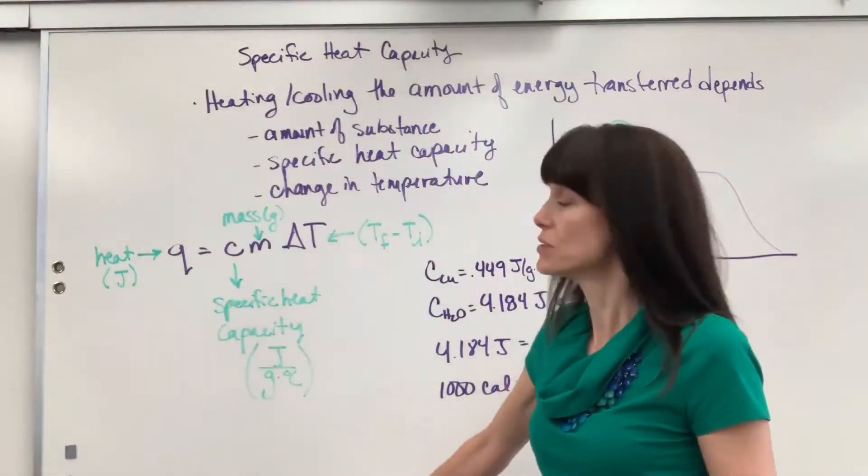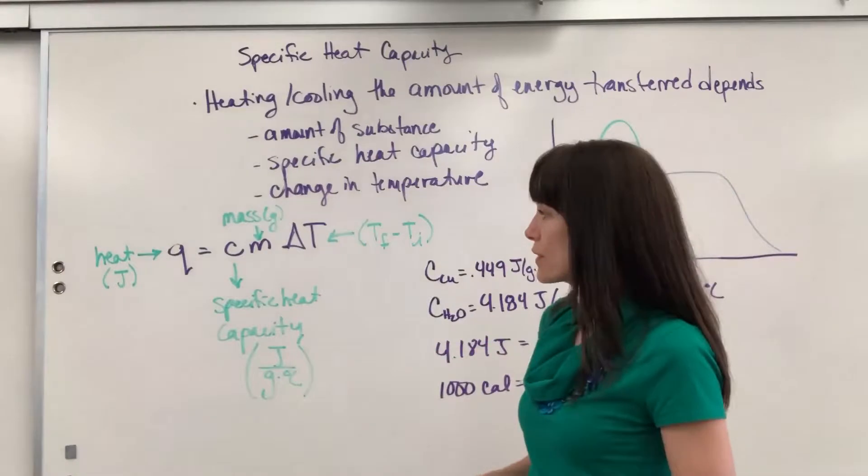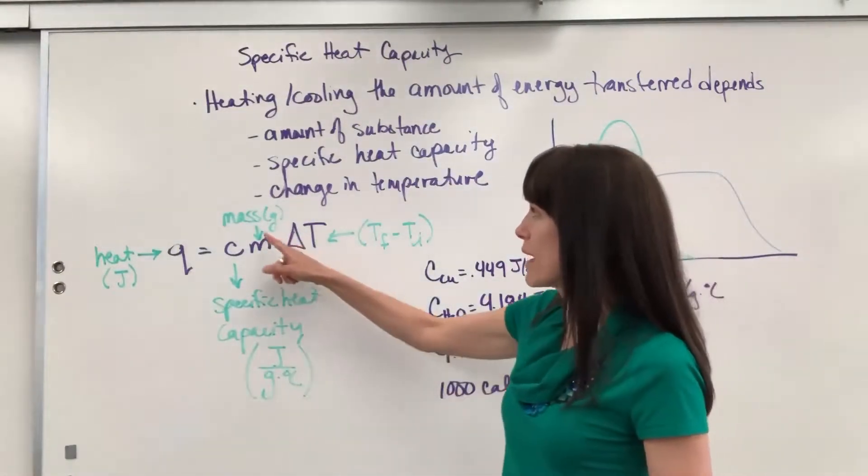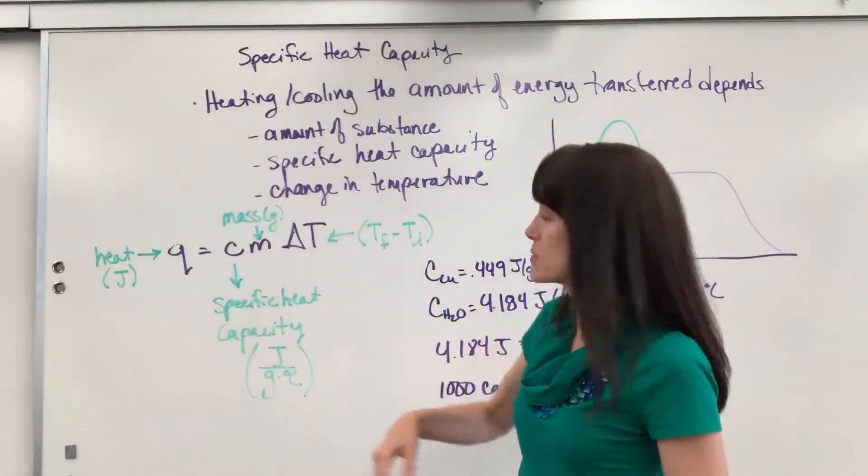Now you could adjust the units. You could have kilojoules for the heat, you just have to have kilojoules for that specific heat capacity. Same thing with mass. You could have grams or kilograms, but it would have to be the same for that specific heat.